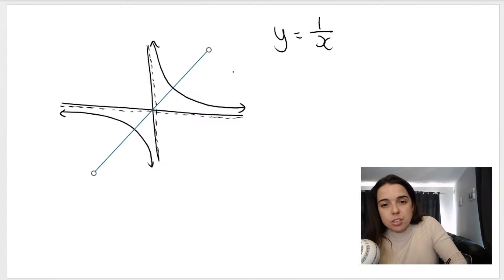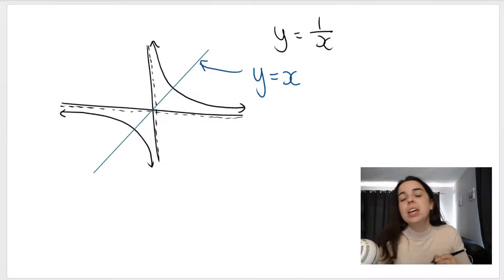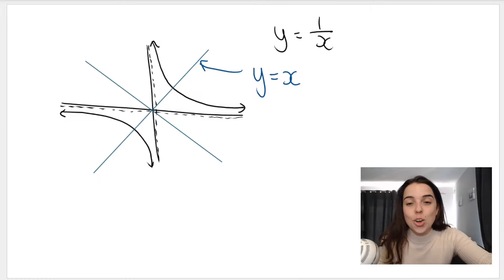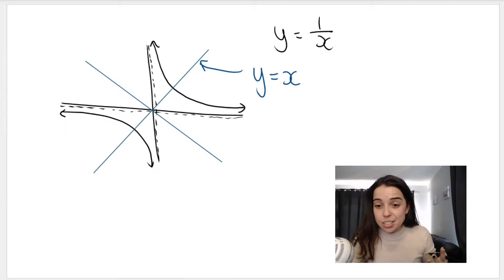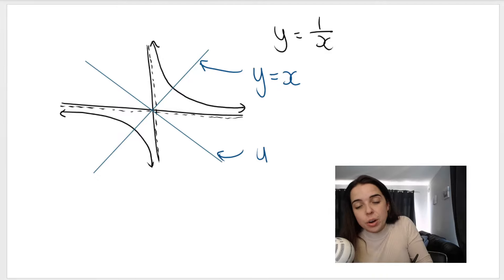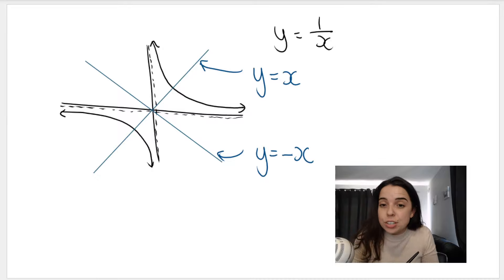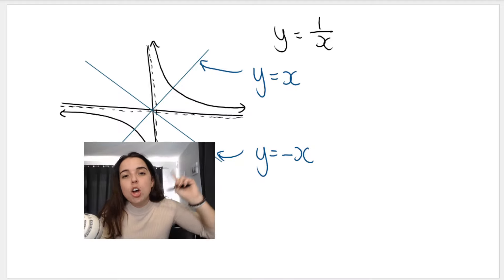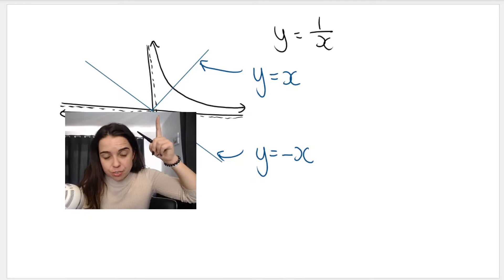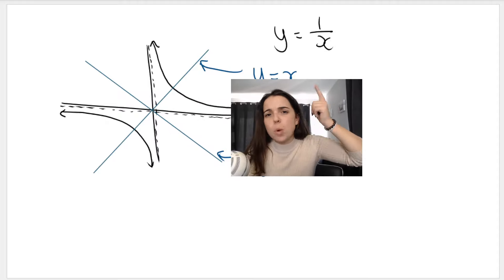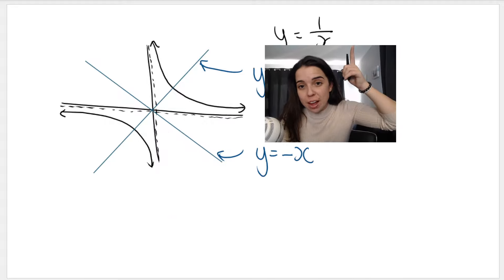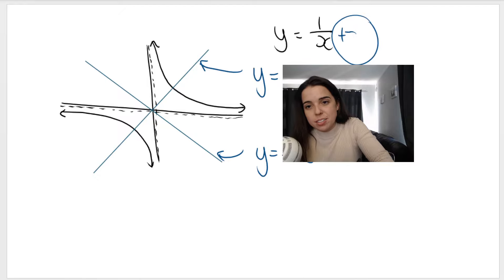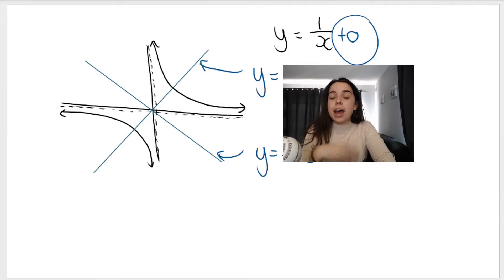There is a second axis of symmetry, which is a decreasing line with a negative gradient, giving the equation y equals negative x. Notice both lines pass through the origin — no y-intercept — because the q value is 0, so the axes of symmetry also have a plus zero, meaning no y-intercept.